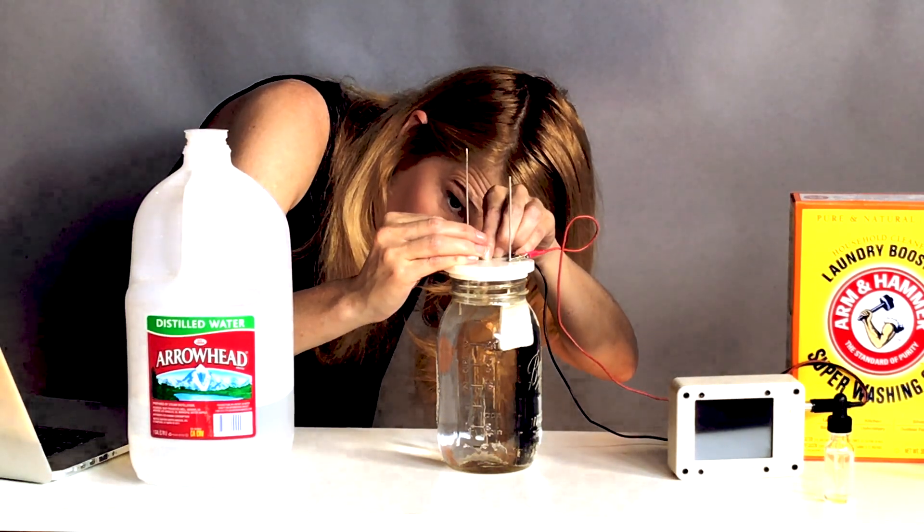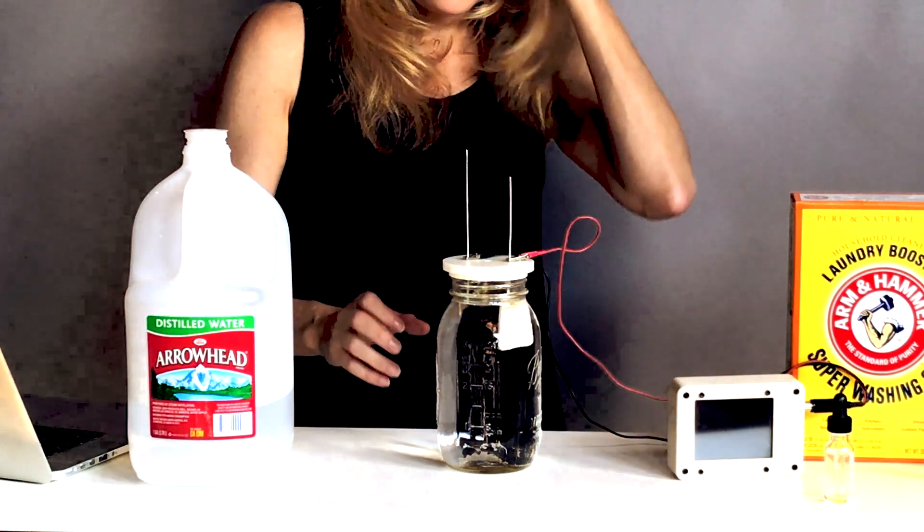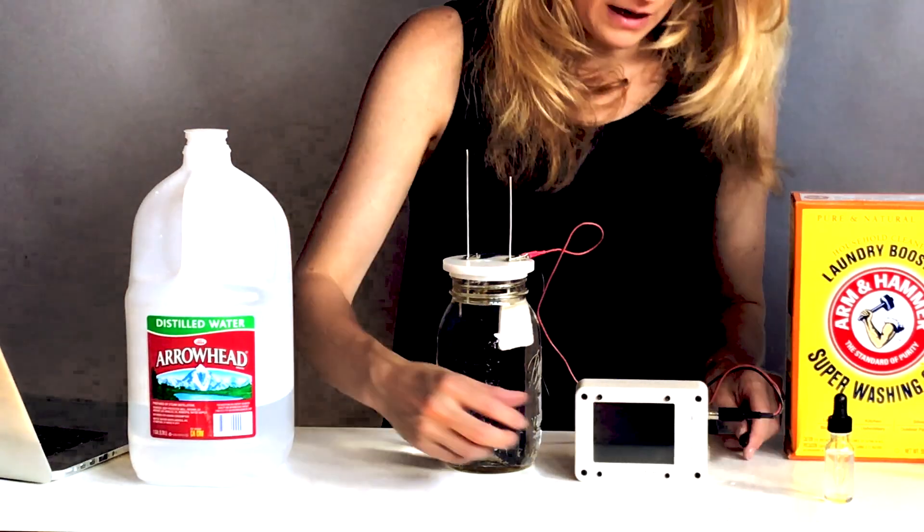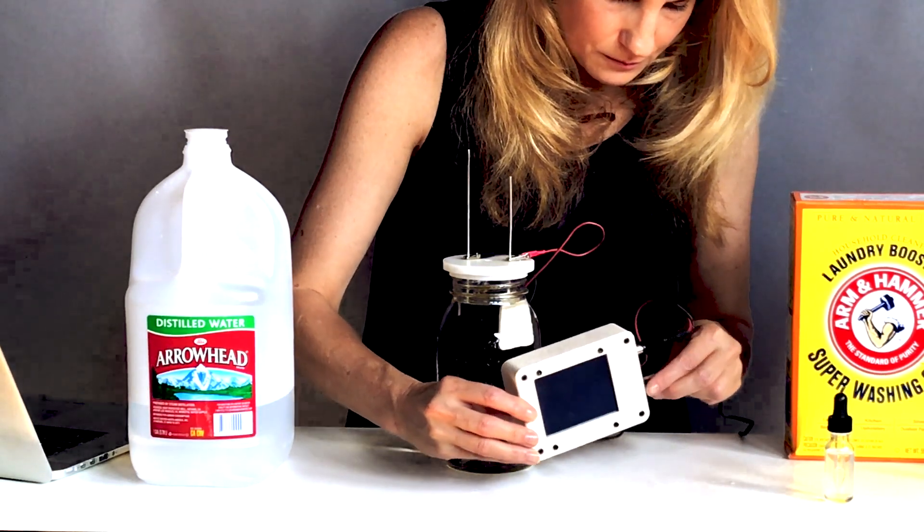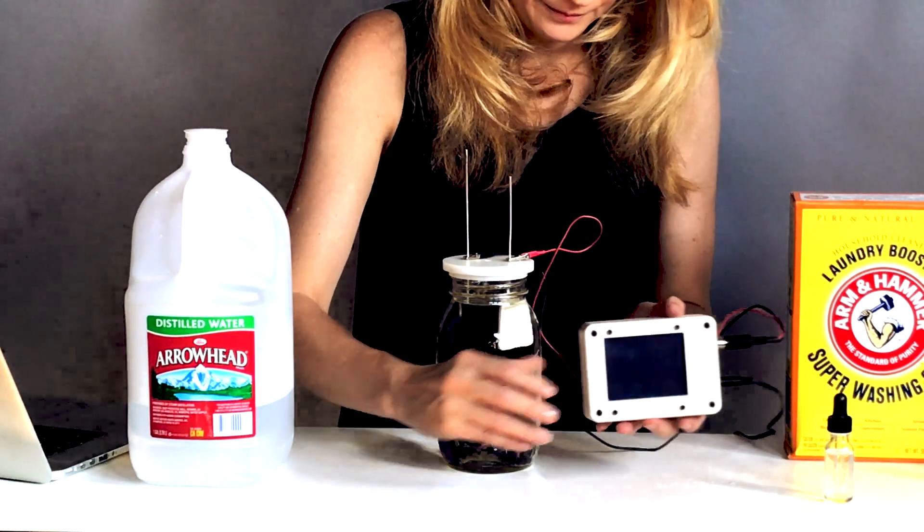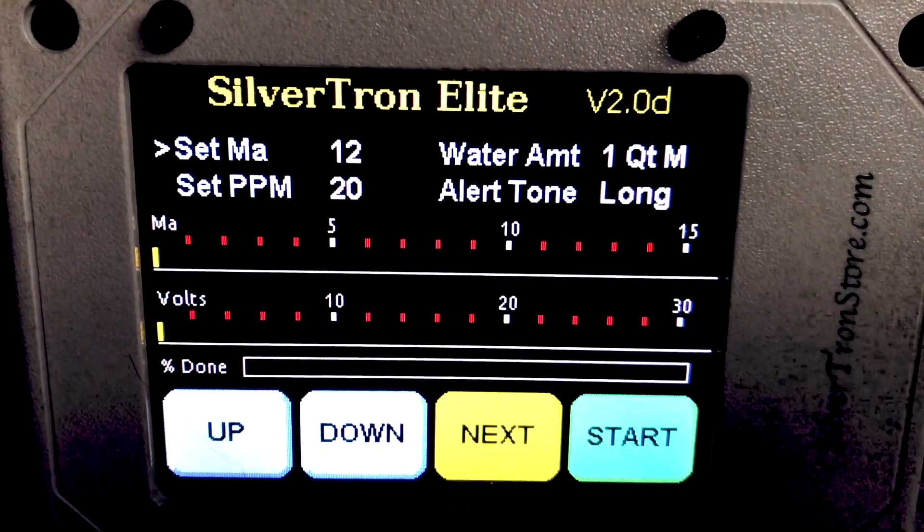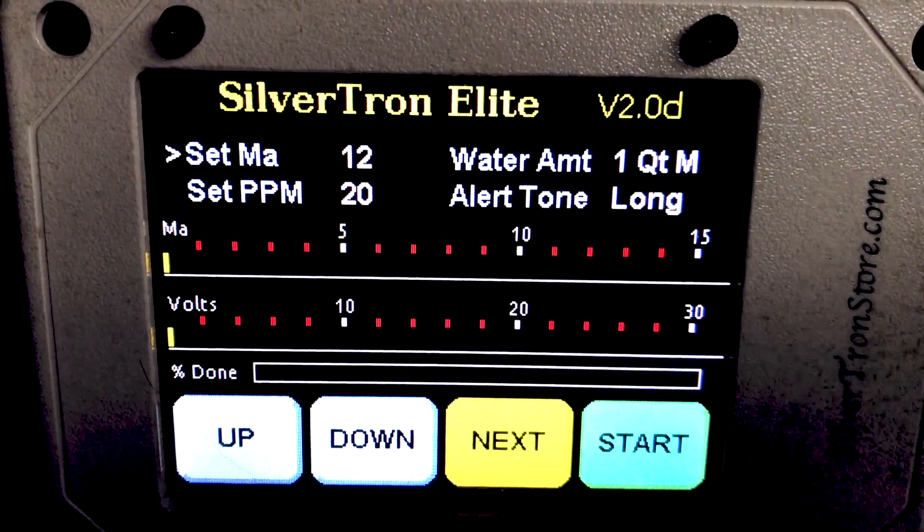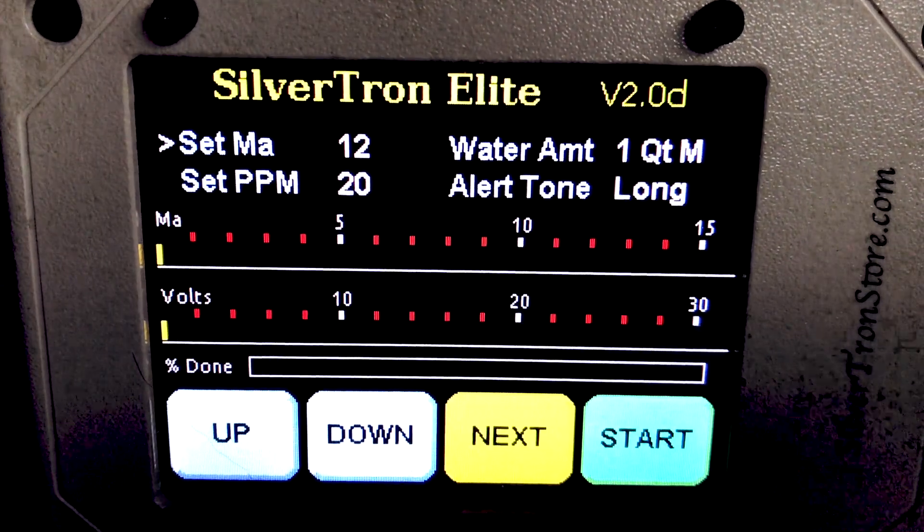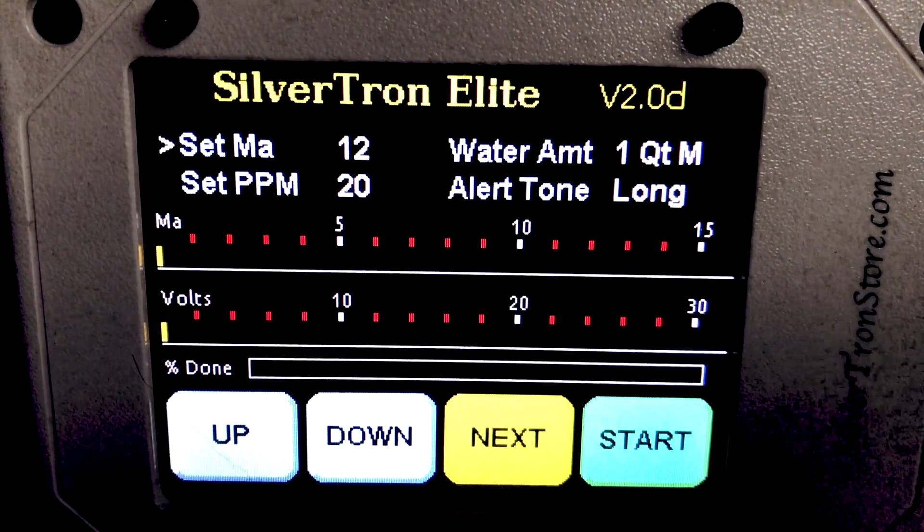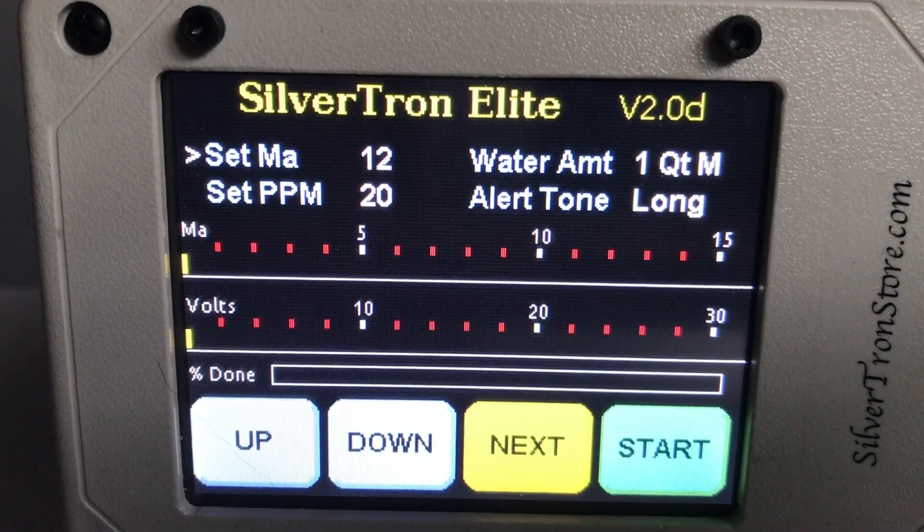So next I'm going to plug in my machine. Okay, this is exactly what you need for 20 parts per million. My MA is set at 12, my parts per million 20, the water amount, that's one quart mason jar, the alert tone is long, and all I need to do now is click start.